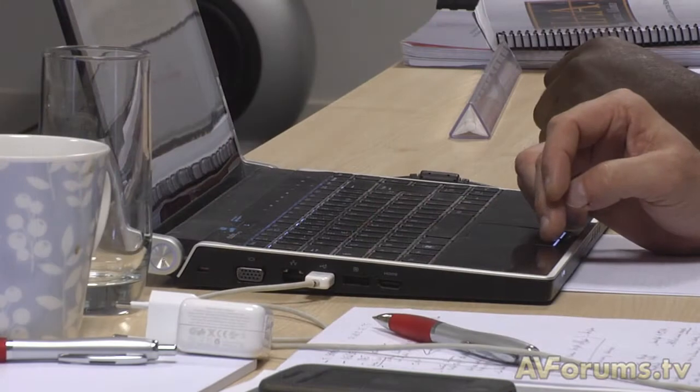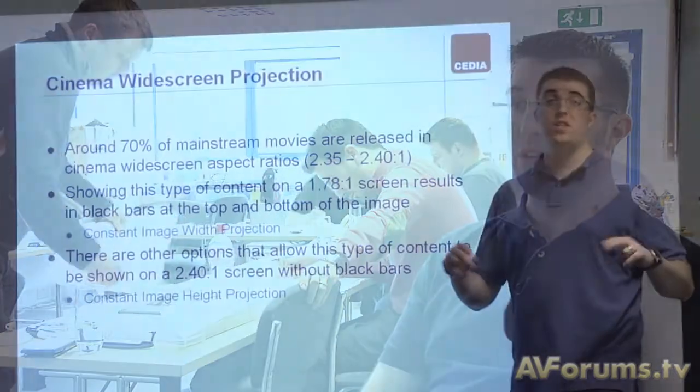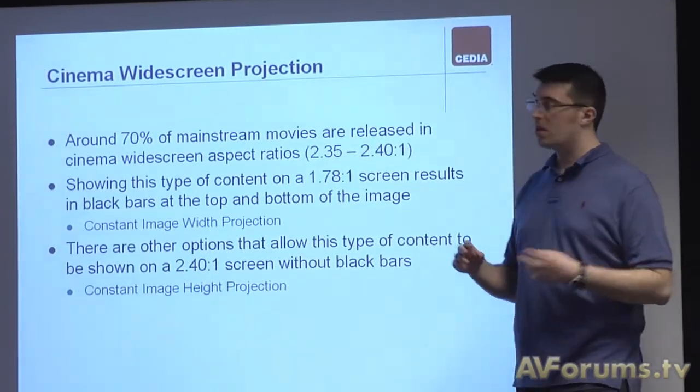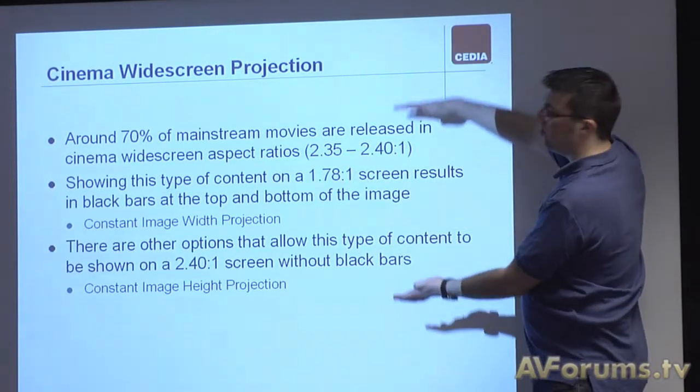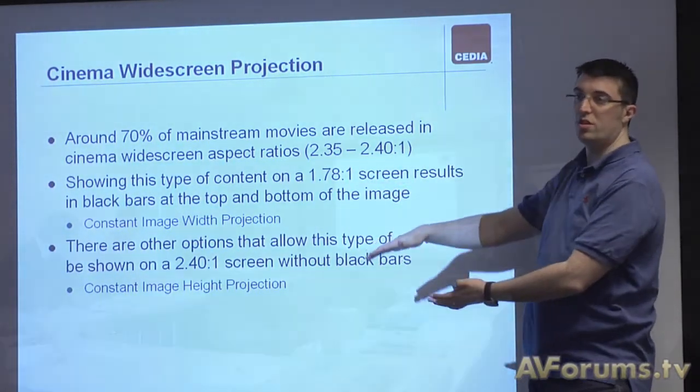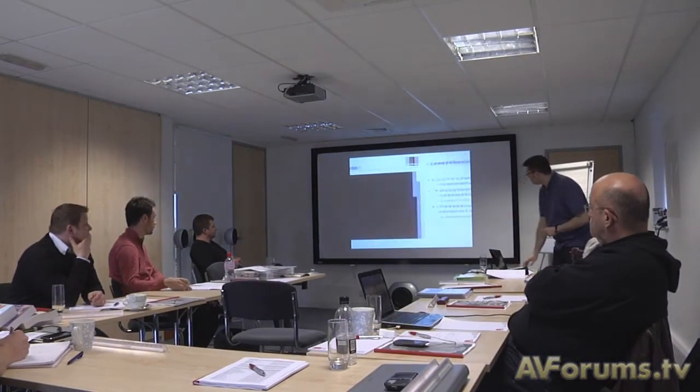On the course we try and teach the guys the fundamentals of both video and audio. For video we look at specifying the correct screen size, the correct seating distances, the correct projector brightness, and a few other topics besides, including some calibration. For audio we try and look at specifying the correct speakers, the speaker loudness that would need to be achieved, which amplifiers would be used to do that, and also the speaker locations. We also have some time to look at some small topics about room acoustics.